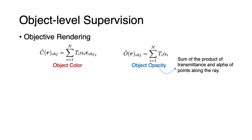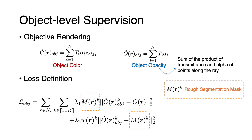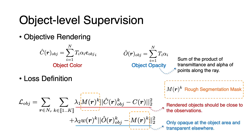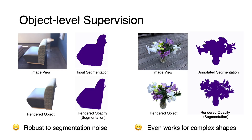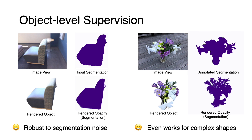I will now describe more details of object-level supervision. The resulting rendering of the object branch includes object color and opacity, where the object opacity is a sum of the product of transmittance and alpha of points along the ray. The object-level supervision additionally requires a rough segmentation mask, which restricts the color supervision inside the visible areas and provides guidance to the object opacity. The final loss for the object branch is a combination of a color term and an opacity term, which encourages the rendered object to be close to the observation, and the rendered opacity to be opaque only at the object area while transparent elsewhere.